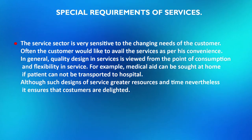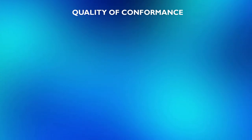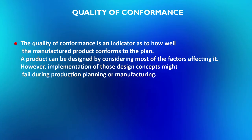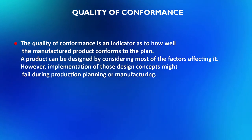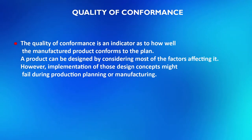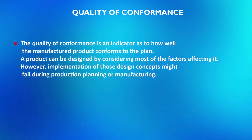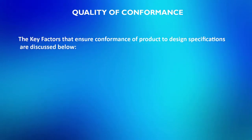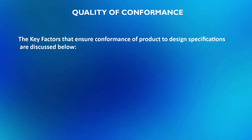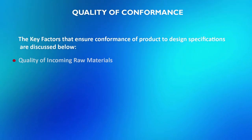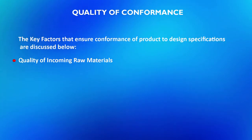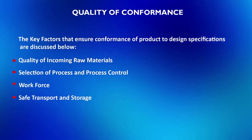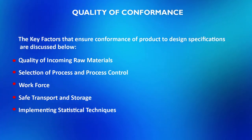The quality of conformance is an indicator of how well the manufactured product conforms to the plan. A product can be designed by considering most of the factors affecting it; however, implementation of those design concepts might fail during production planning or manufacturing. The key factors that ensure conformance of product to design specifications are: quality of incoming materials, selection of process and process control, workforce, safe transport and storage, implementing statistical techniques, and inspection program.